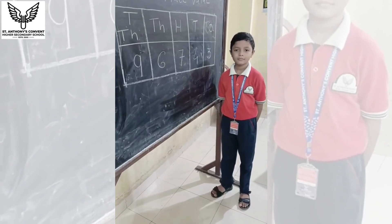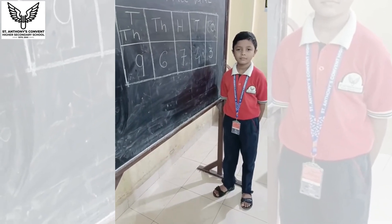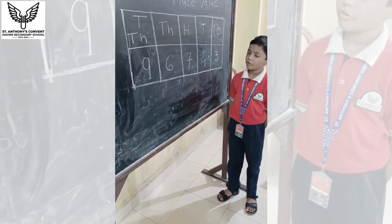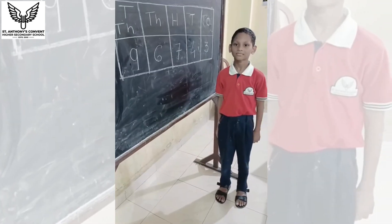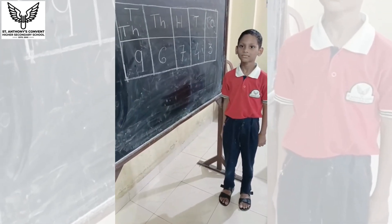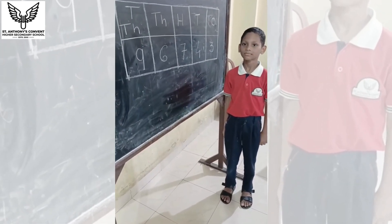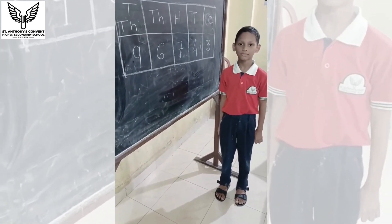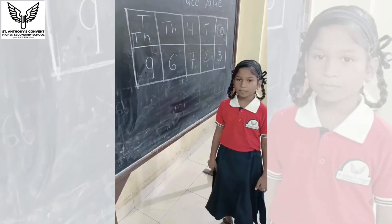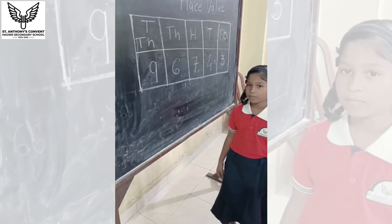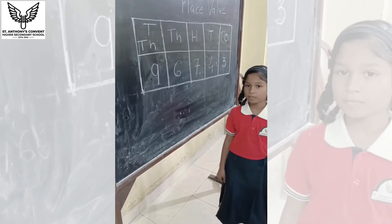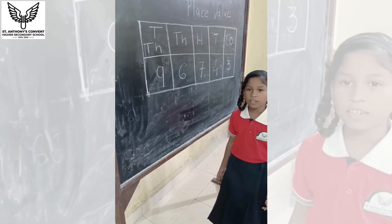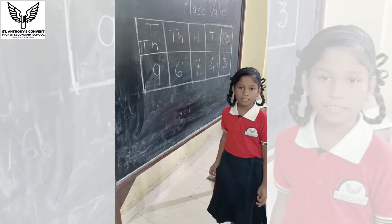Akshat, tell me what is the place value of the number at the place of tens? Forty. Vedan, tell me what is the place value of the number at the place of hundred? Seven hundred. Very good.